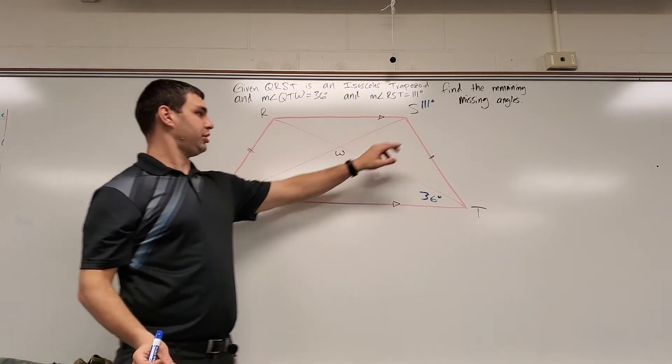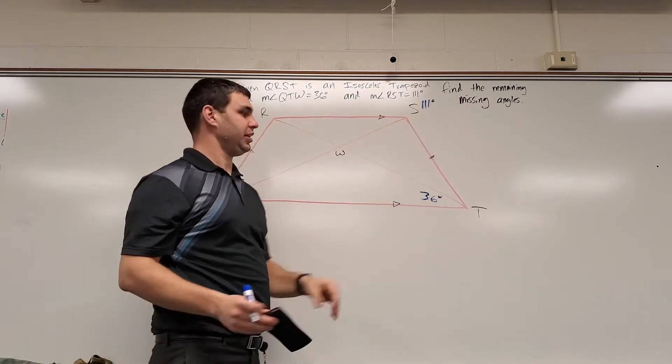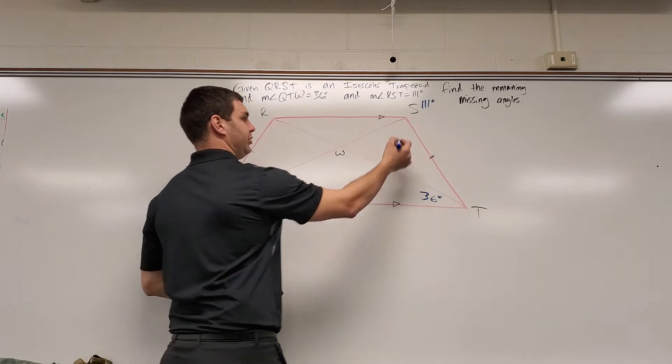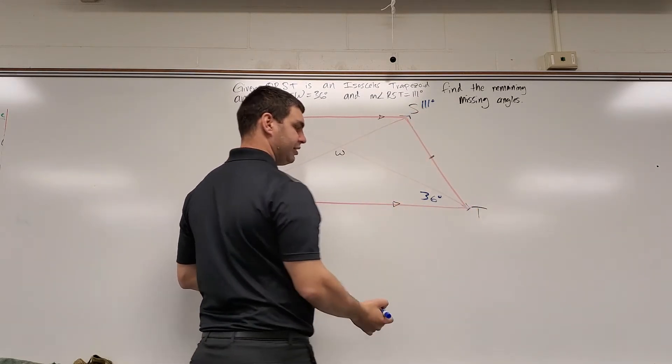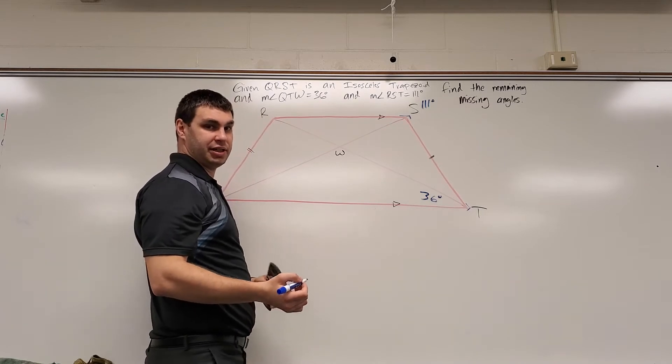Well, by giving us this 111 over here, that's a big key. Since this is a trapezoid, we know that this angle, this 111 plus angle T down here, must add up to be 180.